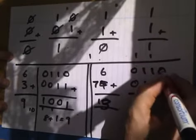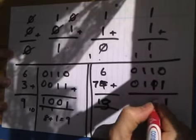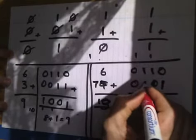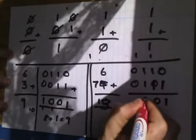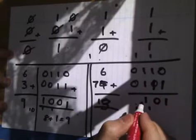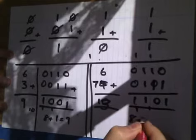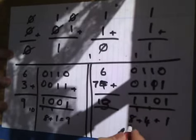So 1 plus 0 is 1. 1 and 1 is 0 carry 1. This is what I wanted to show you. 1 and 1 with the carry is 1 carry the 1 and 0 and 0 and 1 is 1. So what have we got here? 8 plus 4 plus 1 is 8, 9, 10, 11, 12, 13. Phew, that worked.